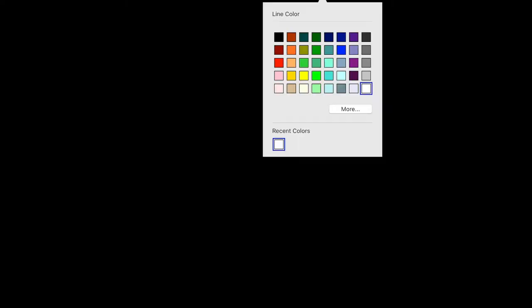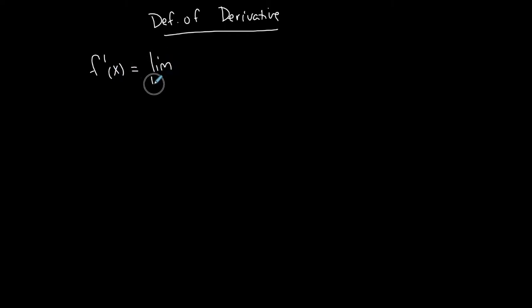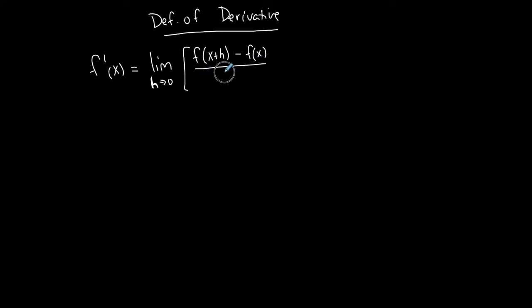I'm going to show an example of finding a first derivative using the definition of the derivative. The definition is: f prime of x is equal to the limit as h approaches 0 of f evaluated at x plus h, minus f of x, all over h.